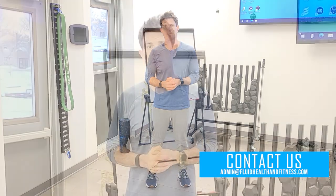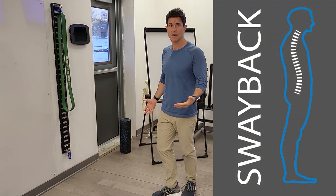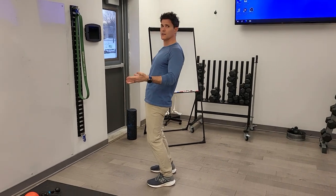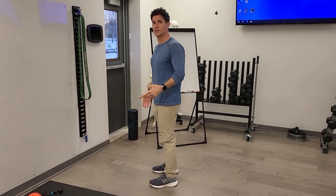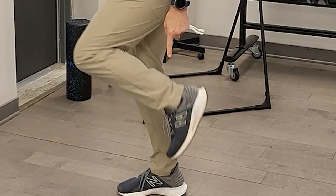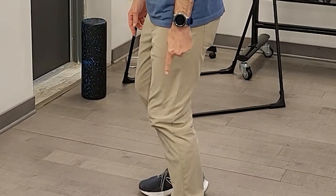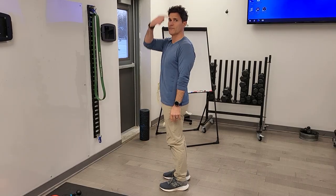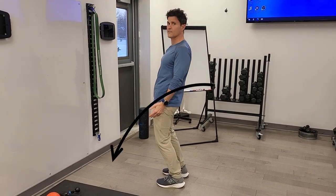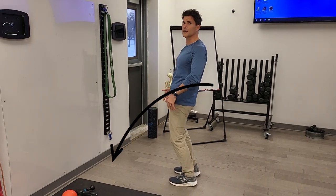So the first thing we're talking about is sway back and what it really is. Essentially, sway back means that your hips are forward of your body weight, or what would be considered your vertical plumb line. A vertical plumb line means that your ankle, hip, shoulder, and ear are all lined up vertically on one line. If your hips are forward of that plumb line, you're said to have sway back.